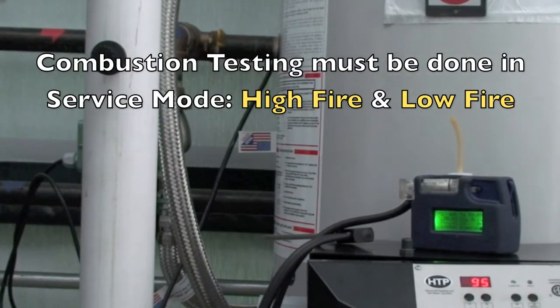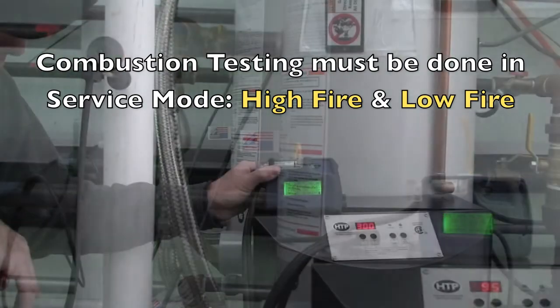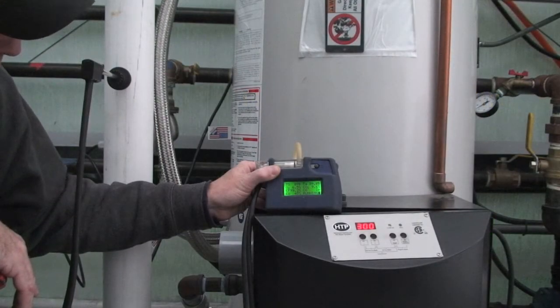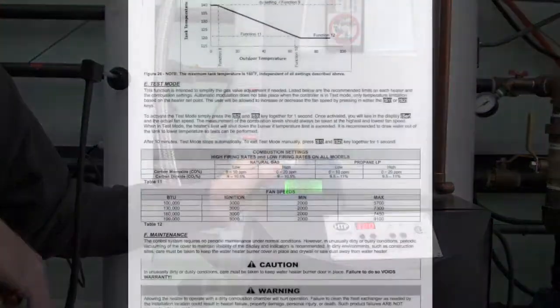Levels should be taken in high fire and also in low fire. Expected high and low fan speeds as well as CO and CO2 levels are provided in the installation and operating manual.